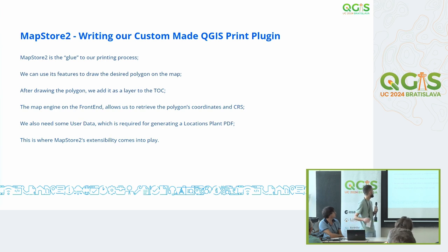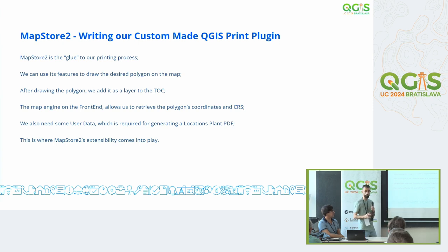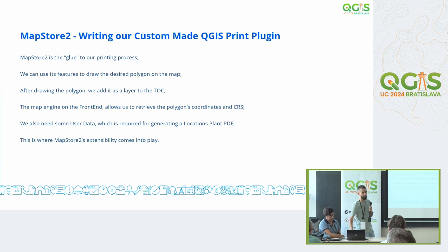Basically, the process is: we draw the polygon on the map with MapStore, we add the polygon as a layer to the table of contents. The map engine on the frontend — in this case OpenLayers — will allow us to retrieve the polygon's coordinates and the coordinate reference system. Just a quick note: MapStore internally in its maps uses EPSG 4326, so we had to work around that — if you're ever thinking of implementing something of the sort, just remember that. After all this is done, we need the user data, which is dependent on the client's requirements, to generate the location's PDF. MapStore's extensibility and documentation made this a whole lot easier for us than making a solution from scratch.